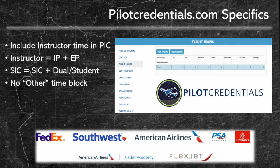The major airlines that use pilotcredentials.com would like you to log time differently. The main difference is that with airlineapps.com you break apart your basic PIC time and instructor PIC time, while with pilotcredentials.com they want you to include your instructor time in your PIC block. For example, if you had 500 hours of basic PIC and 500 hours of instructor time, the instructor block would be 500, but the PIC block would be 1,000. There's also no student or dual column, so your SIC equals SIC time plus dual student time. There is no other time block, and there is no total time field to fill in — it's all calculated on the back end.